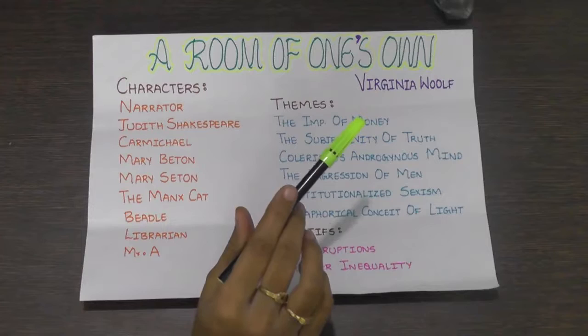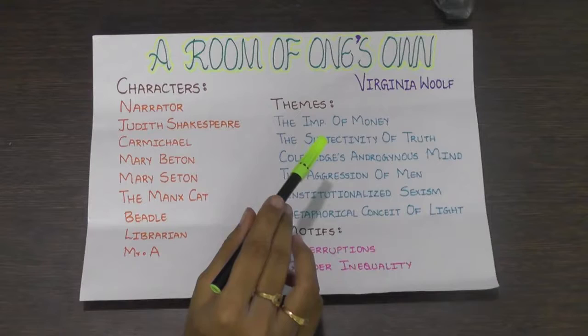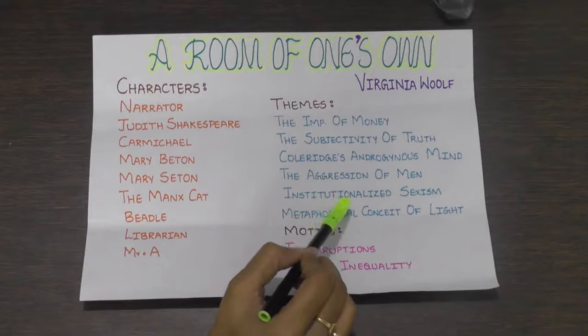The theme of the Aggression of Men: In her metaphor of the looking-glass relationship, men threatened by the thought of loss use women's ability to make them feel strong and invincible.